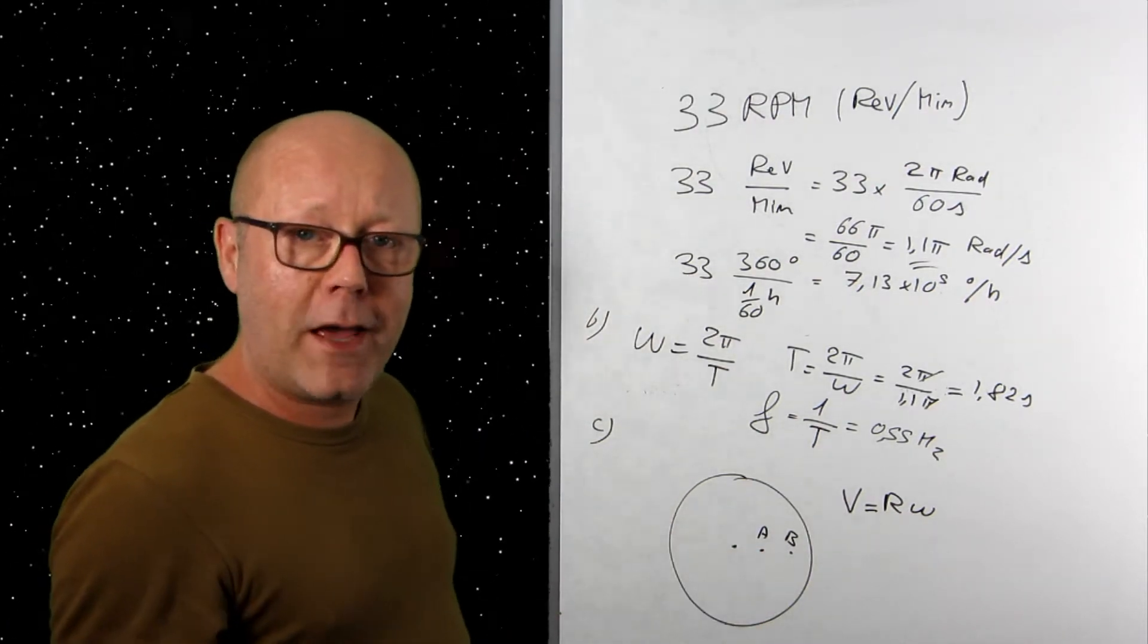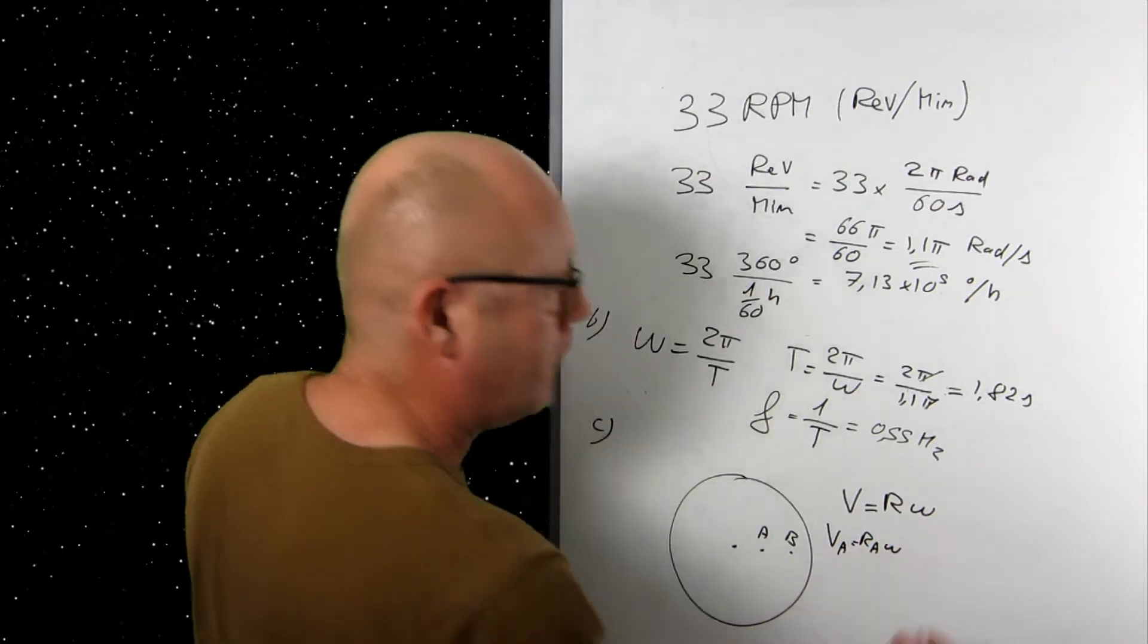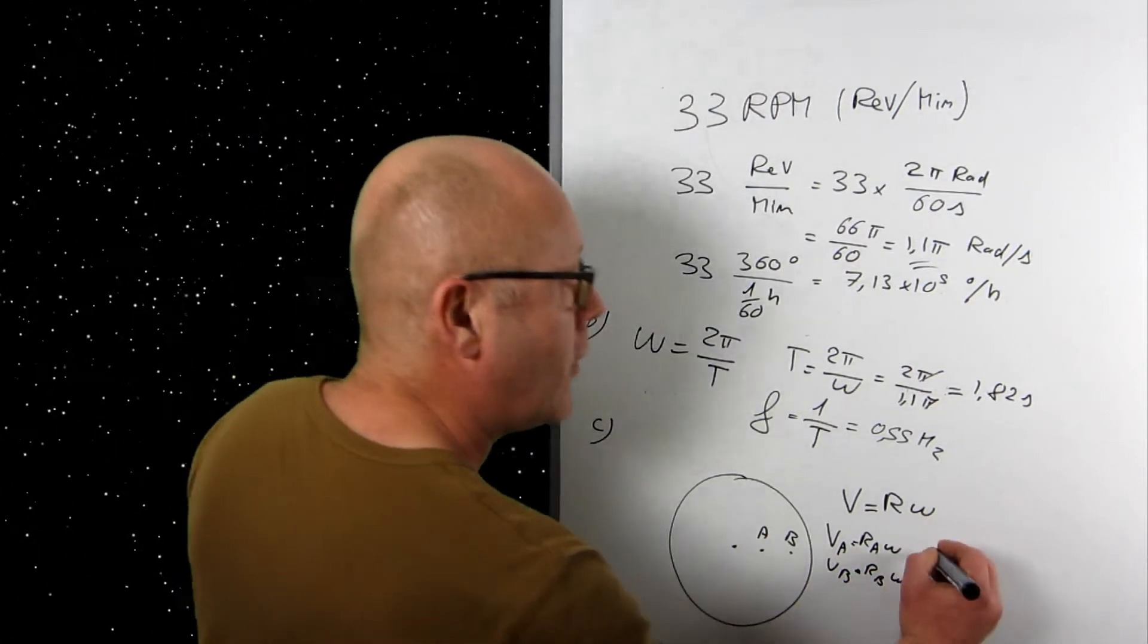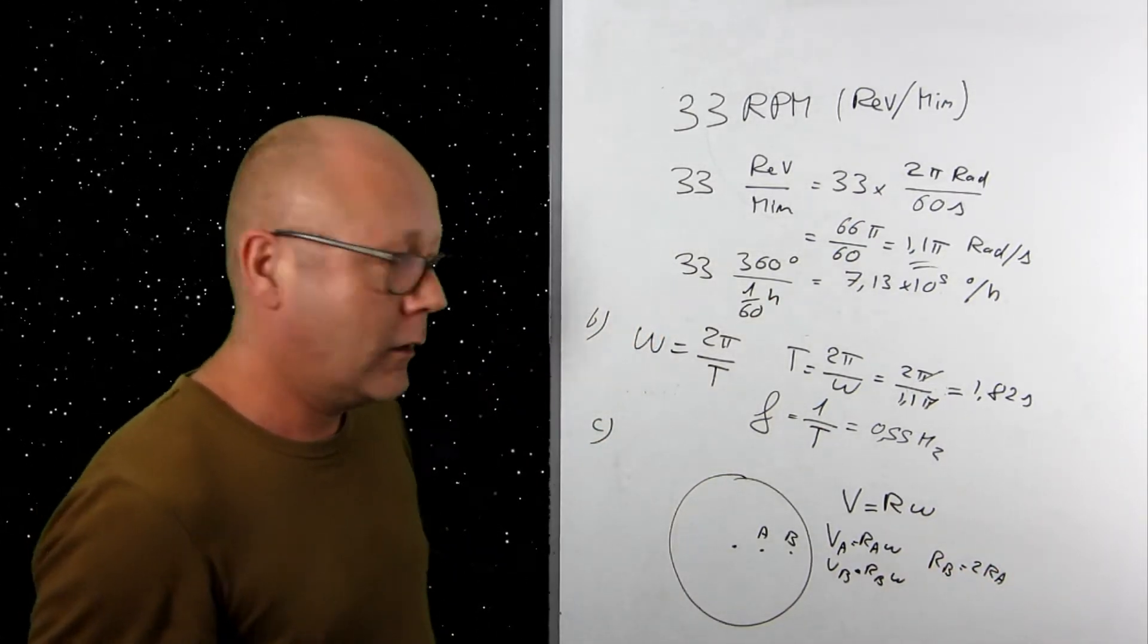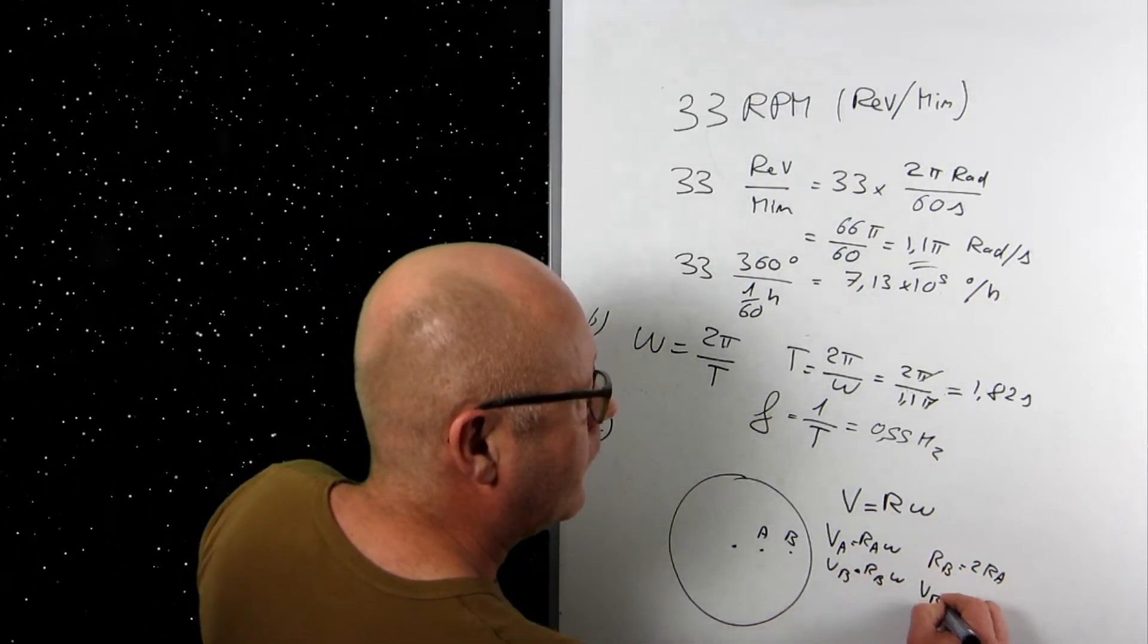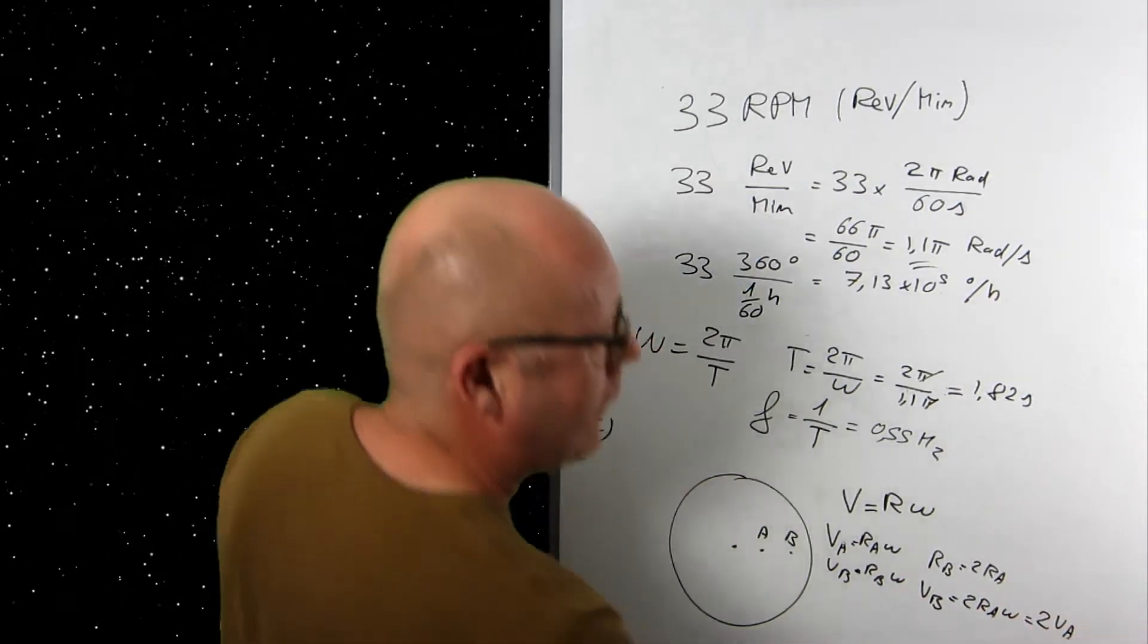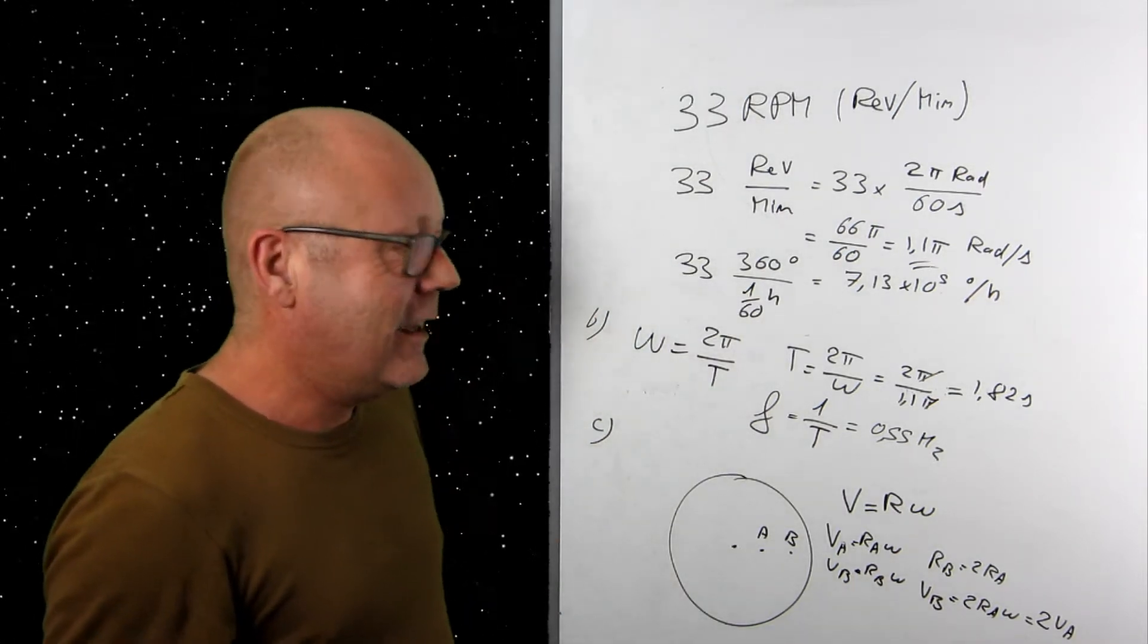Omega is constant, but R changes. So yes, the velocity of B will not be the same as the velocity of A because the radius is different. By how much? Well, you have two cases. You have VA equals RA omega. You have VB equals RB omega. And you know that RB equals 2 RA. So you get VB equals 2 times VA. So yes, the velocity changes. The linear velocity changes. It actually doubles.